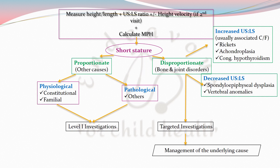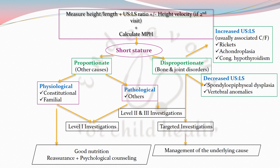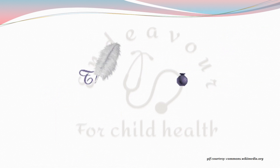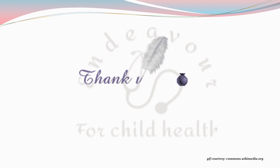In either case, whether physiological or pathological, proceed with level one investigations including CBC, ESR, LFT, RFT, chest x-ray, PPD, stool and urine routine and microscopy, and bone age estimation. For pathological short stature, also proceed with level two and three investigations. If physiological short stature is confirmed through clinical history and examination, good nutrition, reassurance, and psychological counseling are mostly sufficient. For pathological short stature, management of the underlying cause is the treatment of the short stature. Thank you for your patient listening and have a very good day.